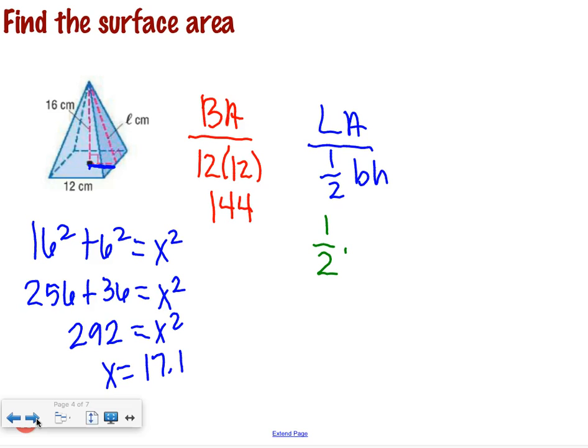What's the base of our triangle? 12. And then our height is 17.1. Anyone want to tell me 6 times 17.1? 102.6. How many triangles make up our pyramid? 4. So 4 times 102.6. Grand total?